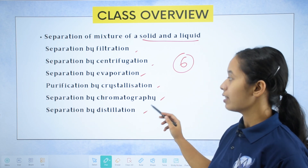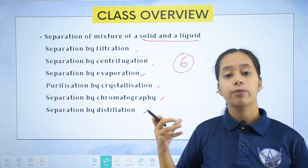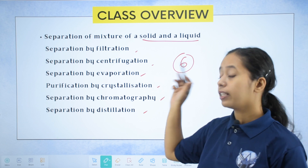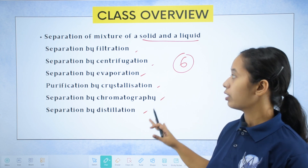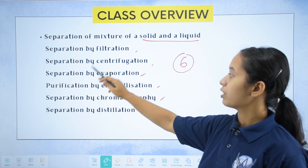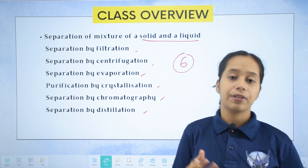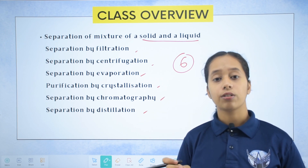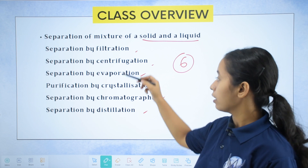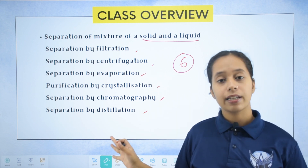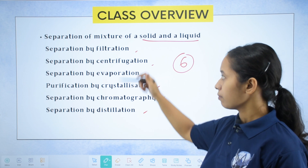Lastly, we will study separation by distillation. Distillation is important because in evaporation, the liquid is lost. If we need to collect the liquid as well, we use distillation. Note that filtration and centrifugation cannot separate completely dissolved solutes, but the other four methods - evaporation, crystallization, chromatography, and distillation - can separate completely dissolved solutes.